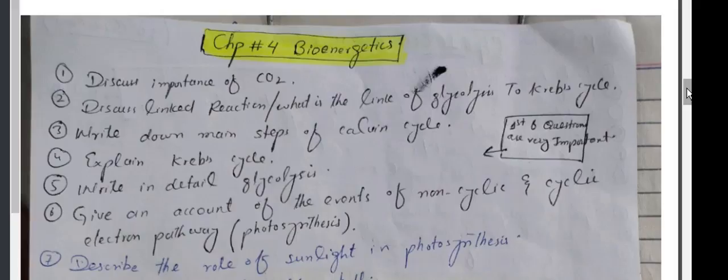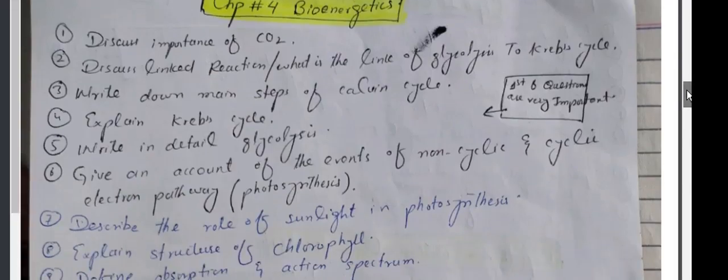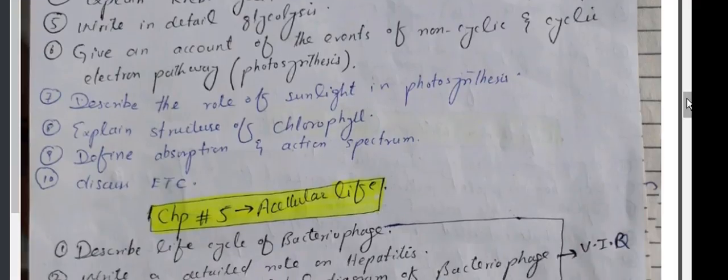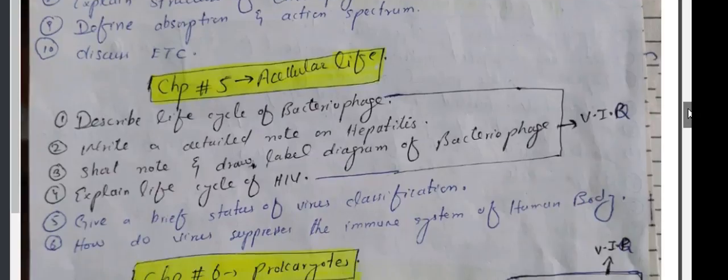Given account of the events of non-cyclic and cyclic electron photosynthesis. Photosynthesis question: describe the role of sunlight in photosynthesis. Explain structure of chlorophyll. Define absorption and action spectrum. Discuss ETC, electron transport chain.